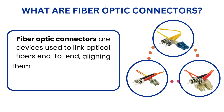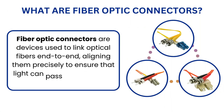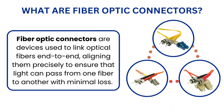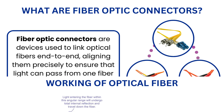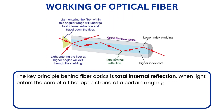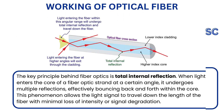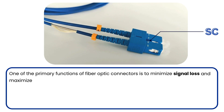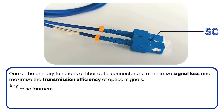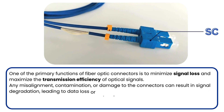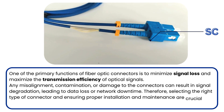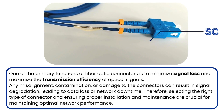What are fiber-optic connectors? Fiber-optic connectors are devices used to link optical fibers end-to-end, aligning them precisely to ensure that light can pass from one fiber to another with minimal loss. The key principle behind fiber-optics is total internal reflection. The primary function of fiber-optic connectors is to minimize signal loss and maximize the transmission efficiency of optical signals.